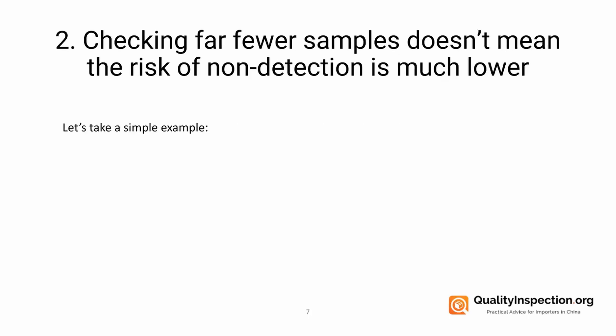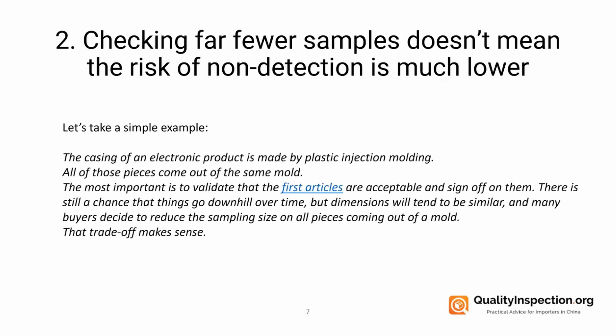For number two, consider the casing of an electronic product made by plastic injection molding — all of the pieces come out of the same mold. So it's important to validate that the first articles are acceptable and sign off. There's still a chance that things can go downhill over time, but dimensions would tend to be similar, and many buyers decide to reduce the sampling size on all pieces coming out of a mold. In that case, the trade-off makes sense.